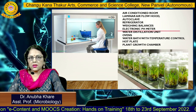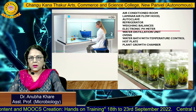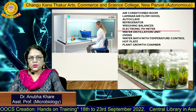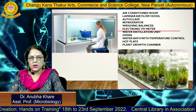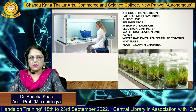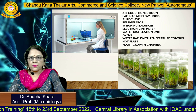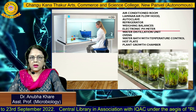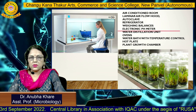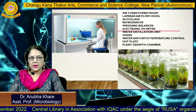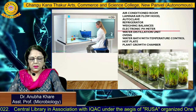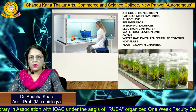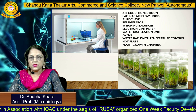Plant tissue culture experiments are carried out in a complete well-furnished lab. It requires an air-conditioned room, laminar airflow hood, autoclave, refrigerator, incubator, weighing balance, water bath, hot plate, and plant growth chamber. The pictures show the plant tissue culture lab, with a lady sitting at the laminar airflow hood performing the experiment.